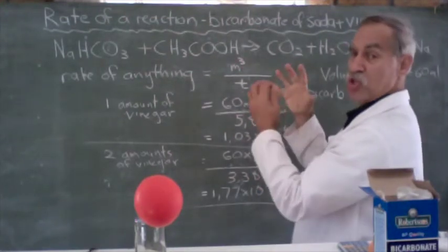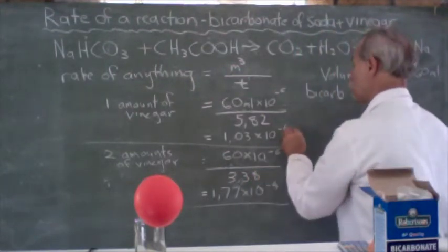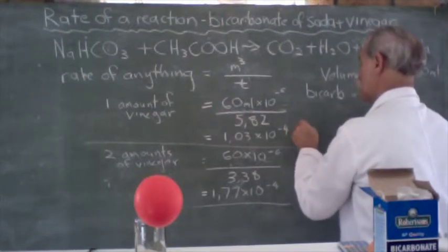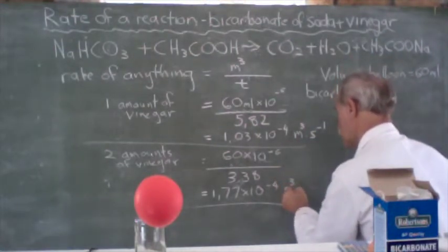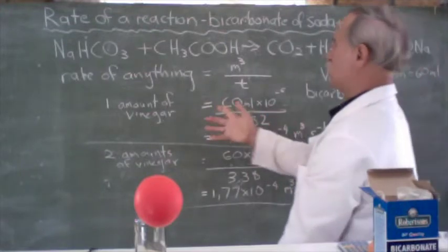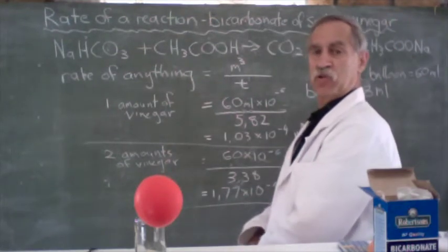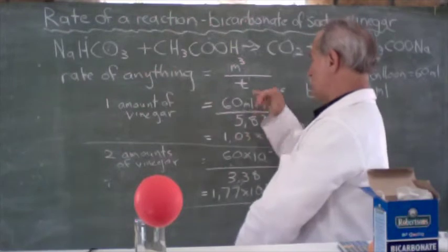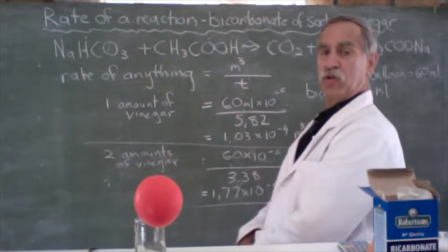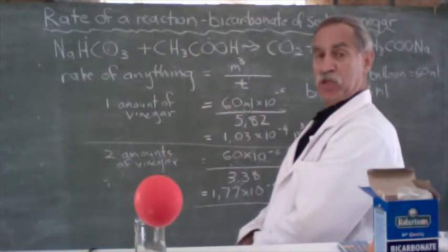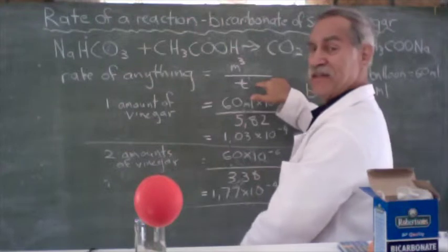We're measuring a volume of gas, meters cubed over seconds. So, these answers would be meters cubed seconds to the minus one. If we were measuring an ionic concentration, we could have moles per decimeter cubed over time. If we were measuring the sodium acetate formation, we could have moles per decimeter cubed divided by time. Don't forget that rate of anything means our denominator is time.